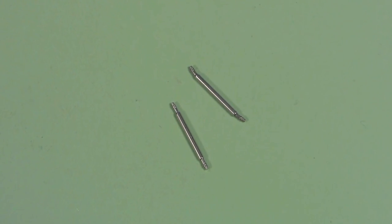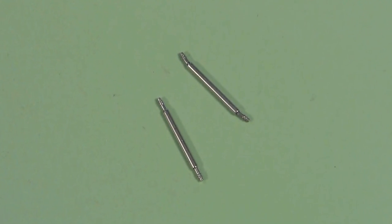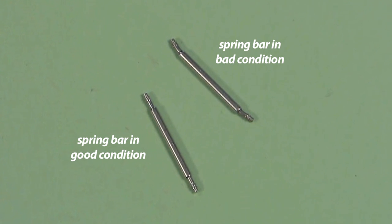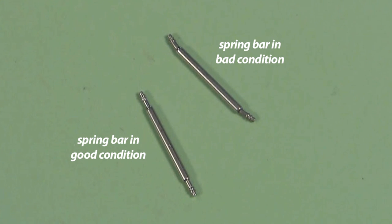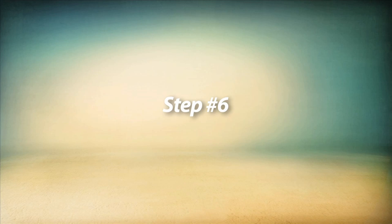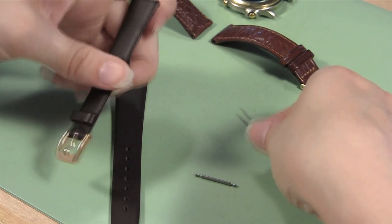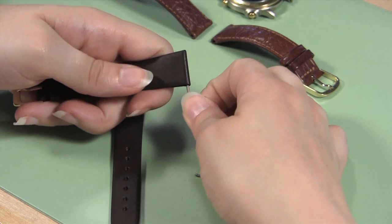You can now place the new watch band onto the watch case. If the spring bars from your old watch band are in good shape, you can use them with your new band. Damaged spring bars look like this. Insert your spring bars into the holes at the ends of the leather watch band.